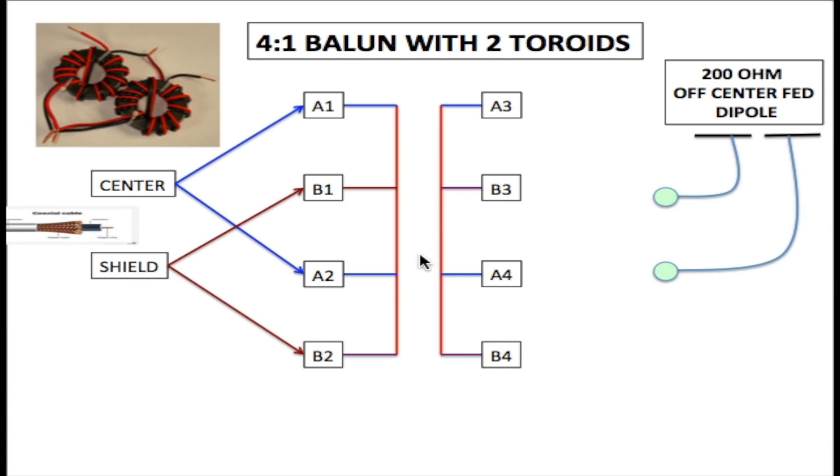So now it goes through this area here, the transformer area. So the output for A1 is A3, B1, B3, A2, A4, B2, B4. So we have our output here right now.